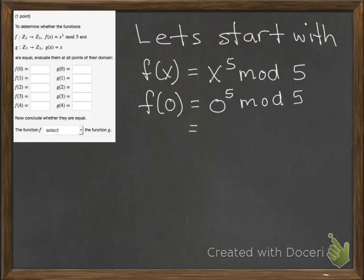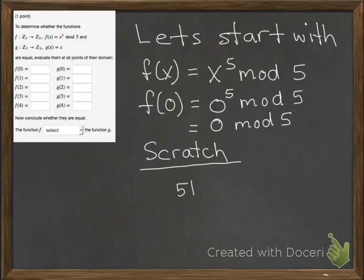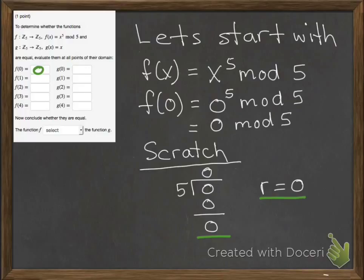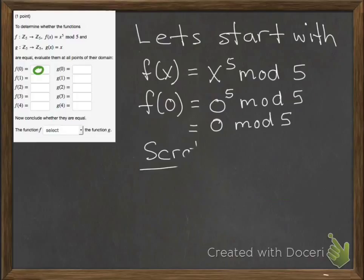We evaluate f of 0: 0 to the fifth mod 5 is 0 mod 5. Our scratch work tells us that 5 goes into 0 zero times; 0 times 5 is 0, and we have a remainder of 0. We write that in.